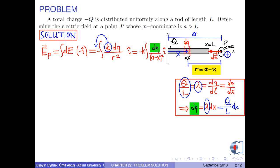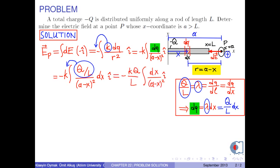So we insert this value into the integral. Therefore, we obtain negative k times the integral of (Q over L) over (a minus x) squared dx, î-hat. Q over L is constant, so it can be taken outside the integral sign, leaving us with negative k times Q over L times the integral of dx over (a minus x) squared, î-hat. According to the figure, the limits of the integral are x equals 0 and x equals L.